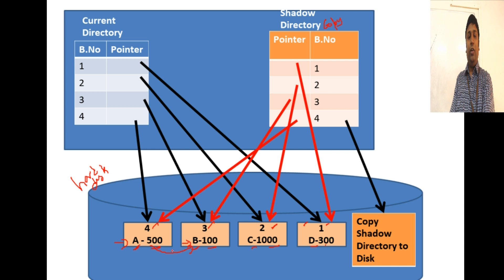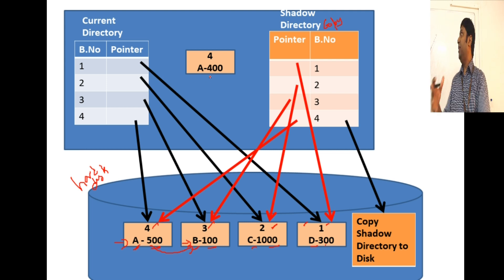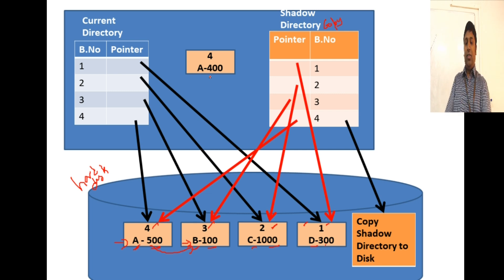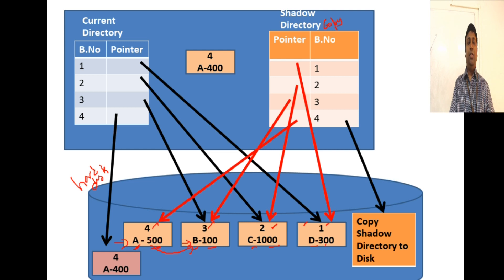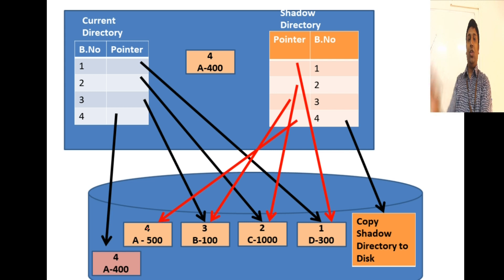Now the transaction starts - it will transfer 100 rupees from A to B. Block A is moved to the main memory buffer, and the transaction modifies it: 500 is reduced to 400. When writing back to the hard disk, it does not write to the same location - it writes to a different new location. The current directory pointer now points to the modified file, while the shadow directory still points to the old page.